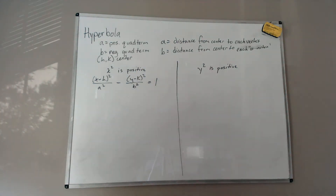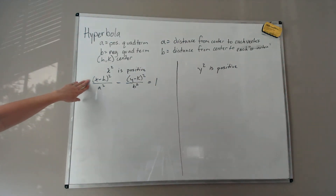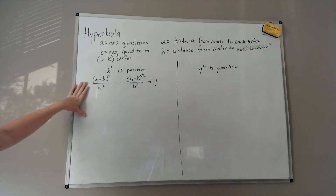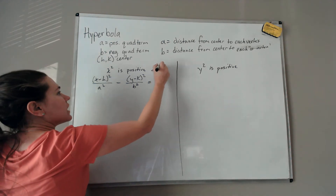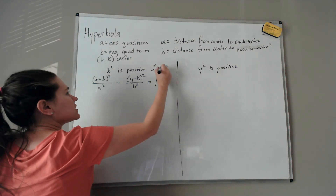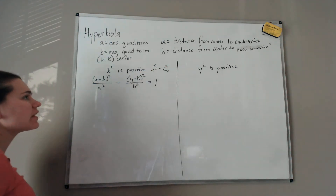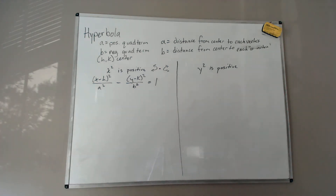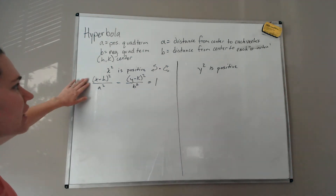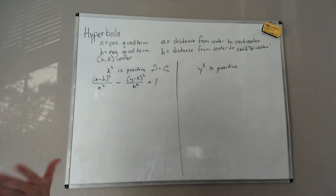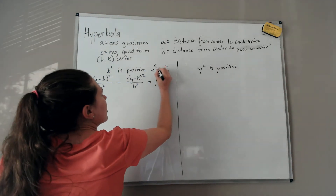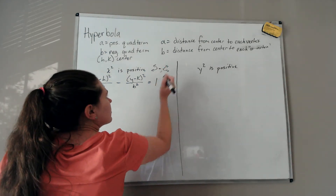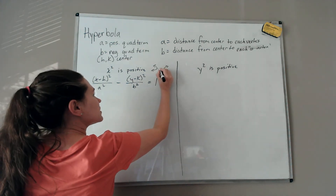Since x-squared is the positive term and y-squared is the negative term, this hyperbola opens left and right. The center is not on the hyperbola. Because x is positive, a corresponds to what we can think of as our major axis, and the major axis is horizontal. Our vertices fall on that horizontal major axis.